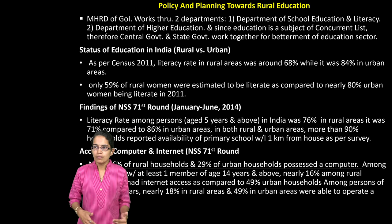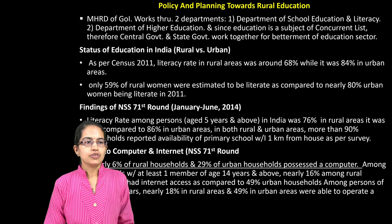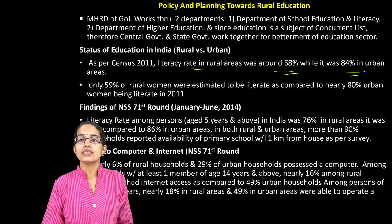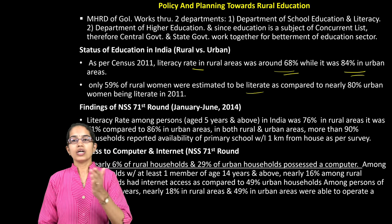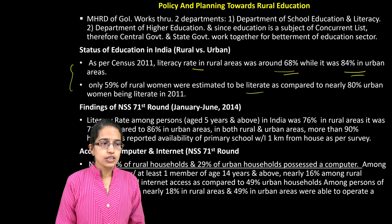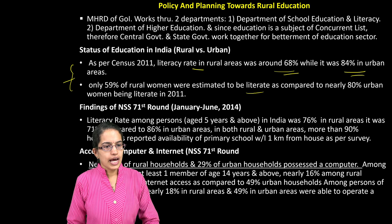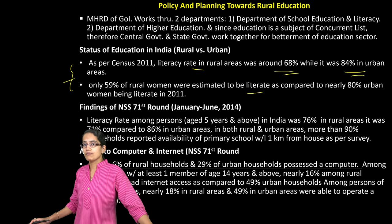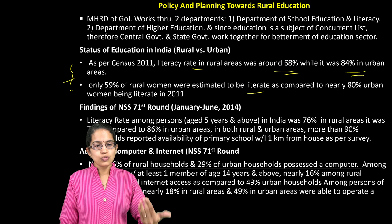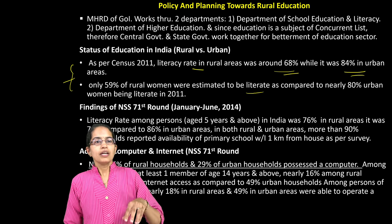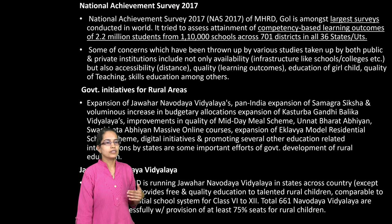Talking about the policy for rural development and education, if we look at the status of education we have literacy values for rural areas vis-a-vis urban areas, along with the proportion of literate rural women compared to urban women. There is a huge divide between rural and urban populations. On computer and internet access, nearly 29% of urban people have access to a computer compared to only 6% in rural areas. The Department of School Education and Literacy and Higher Education are working to address this.